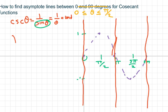So my asymptote lines for cosecant occur right in here, at x equals 0, x equals pi, and x equals 2 pi.